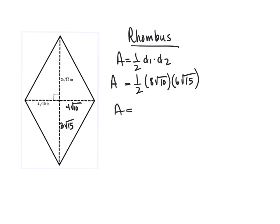We can simplify this. 8 times 6 is 48. Half of that would be 24. Root 10 times root 15 is root 150.